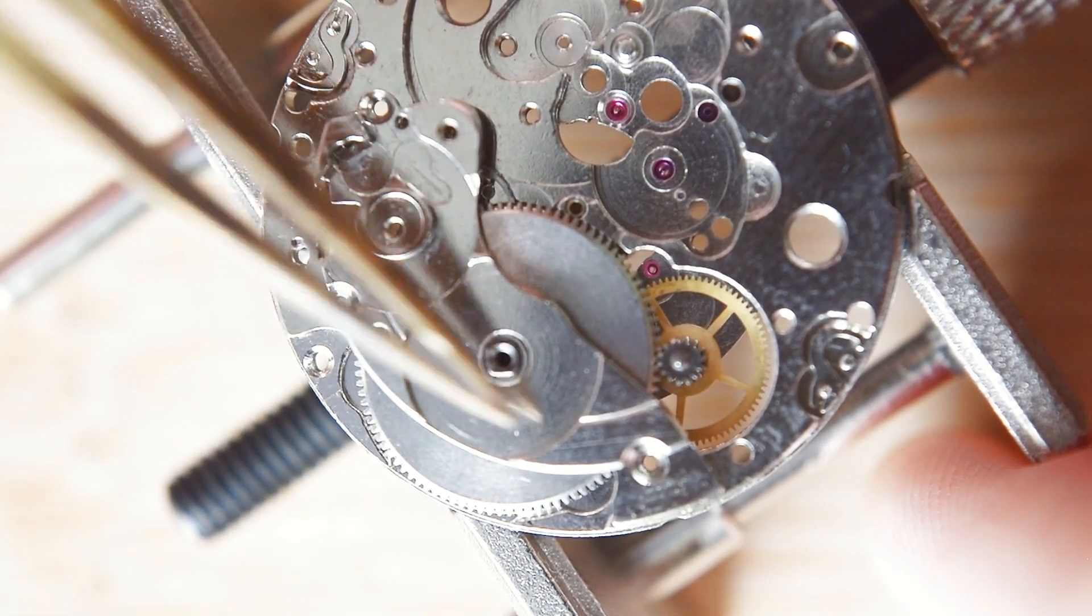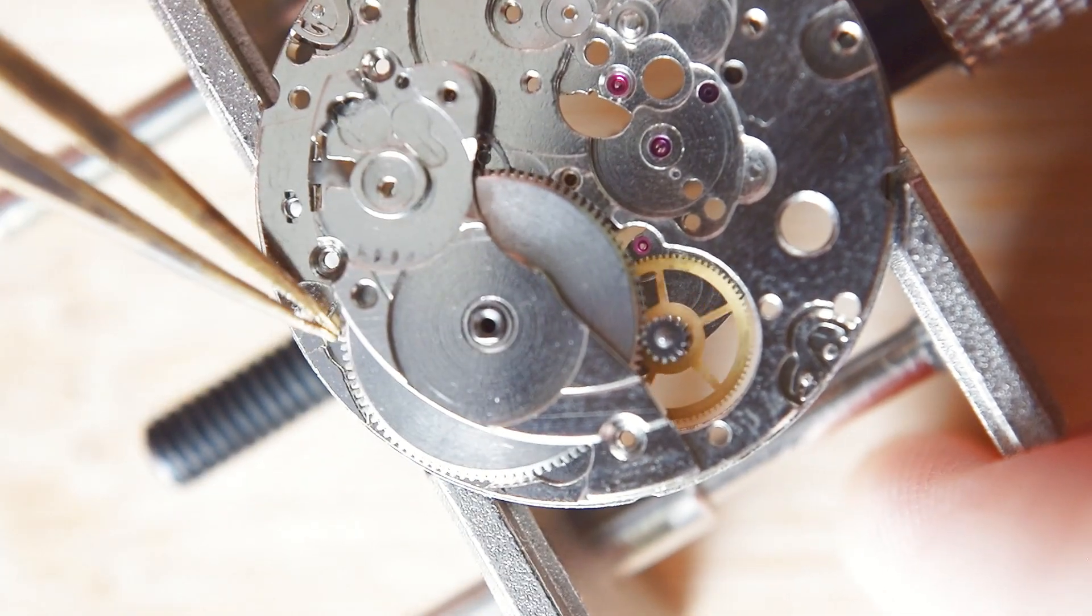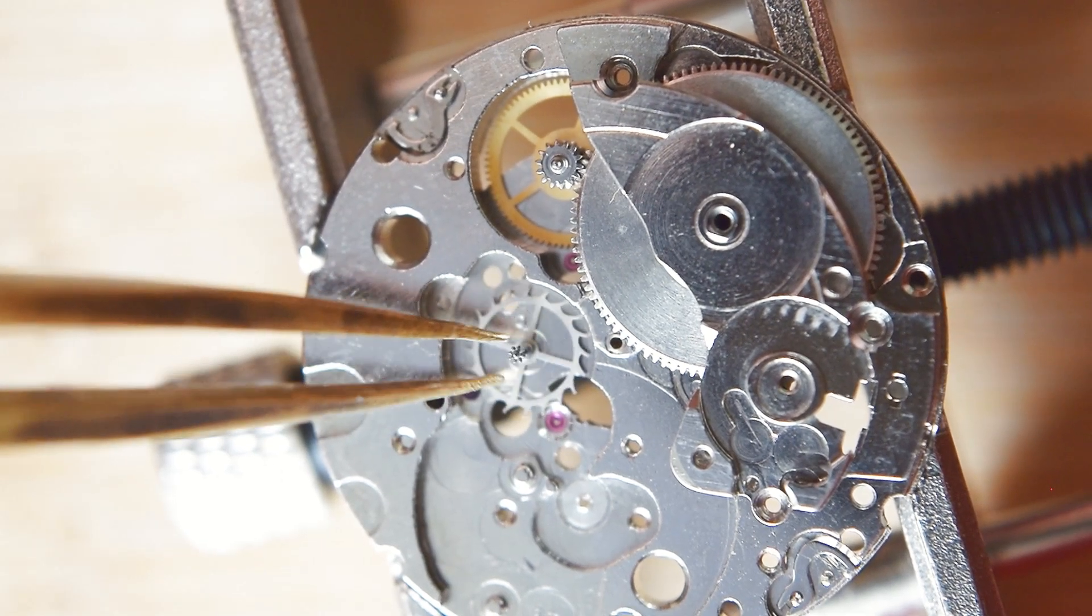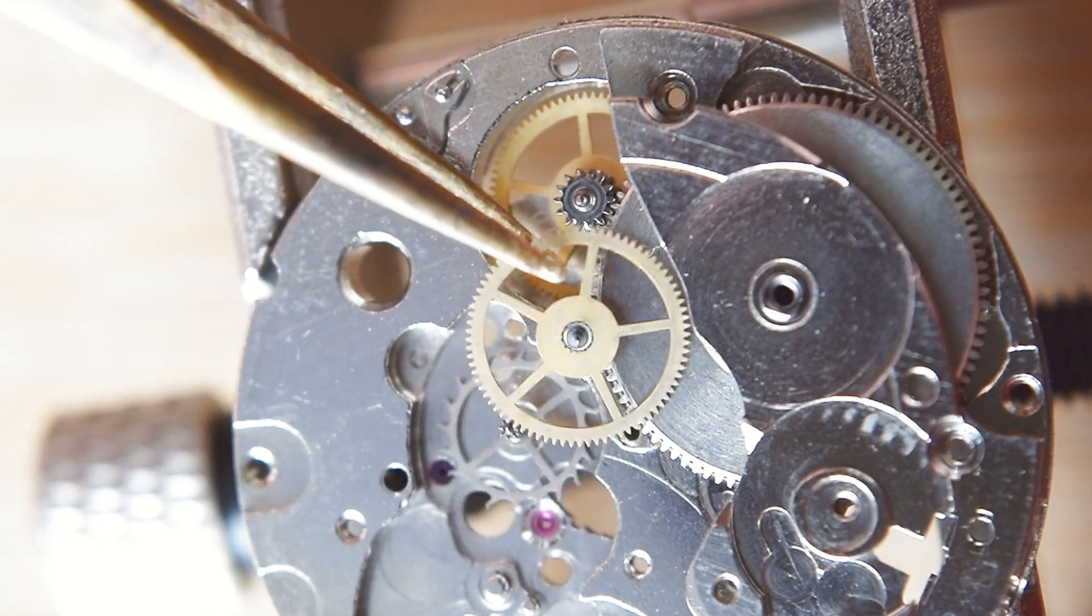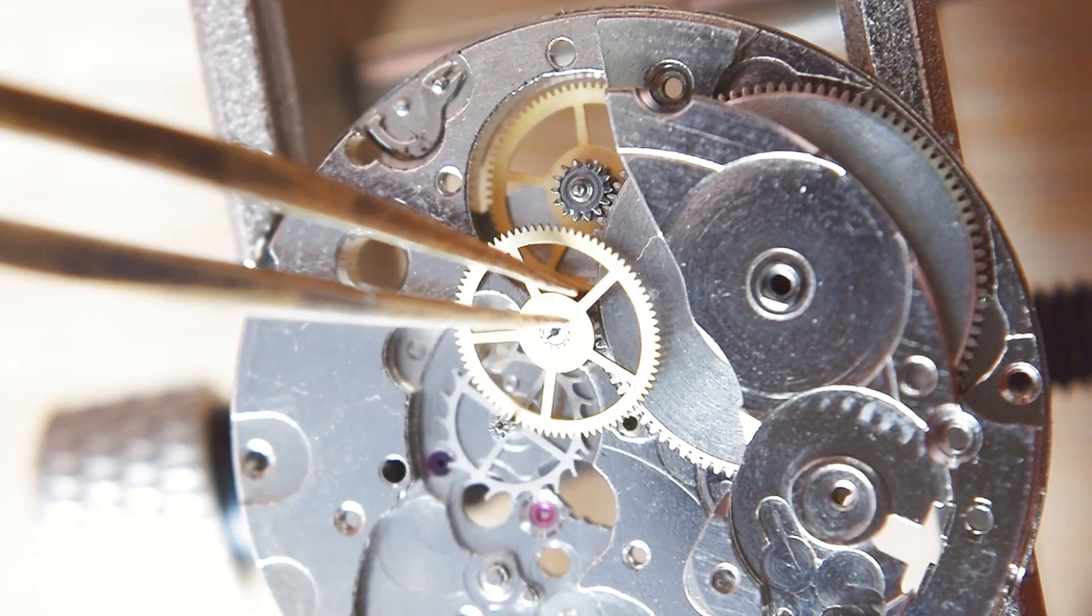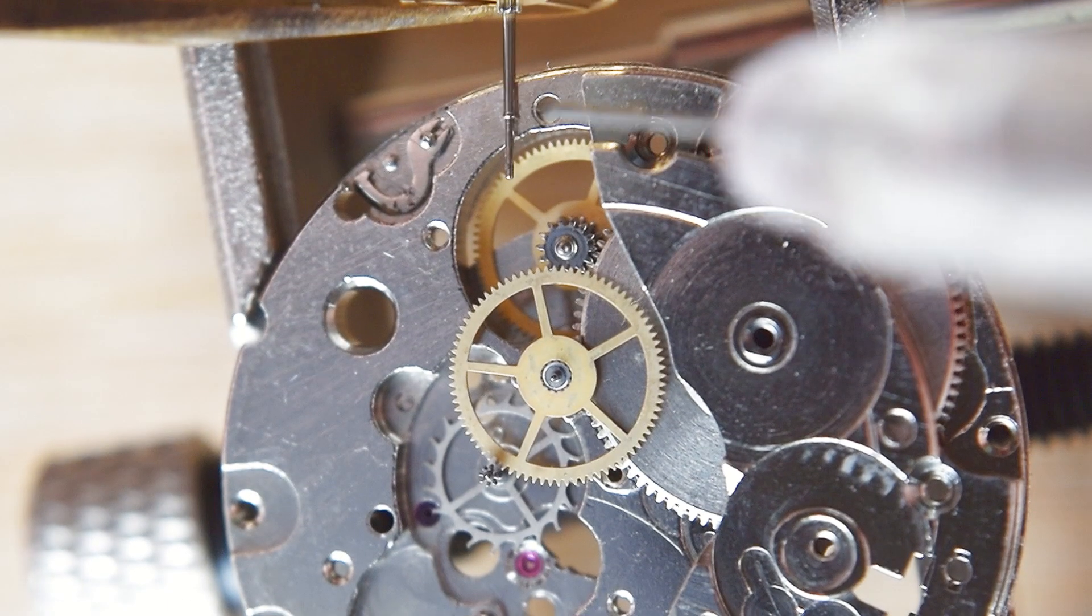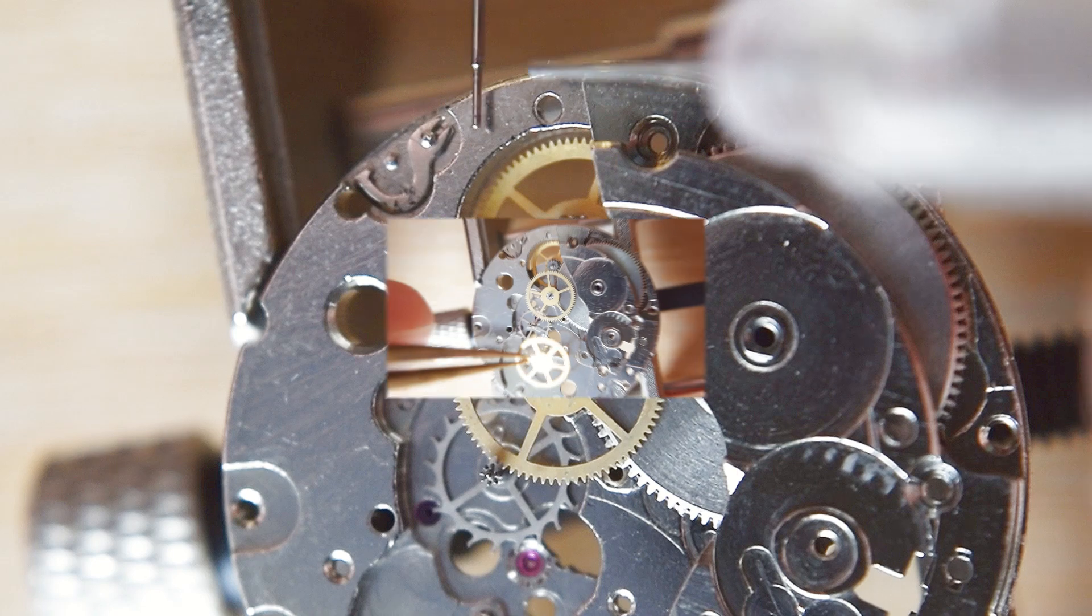The assembly is already started and I started traditionally with the mainspring barrel and the barrel bridge. This ETA 2790 has a stop second and I forgot to put here the stop lever, the lever that stops the balance wheel. I will correct this mistake a little bit later.